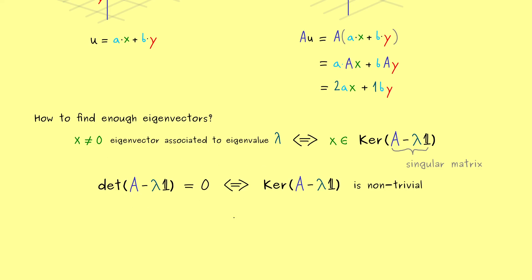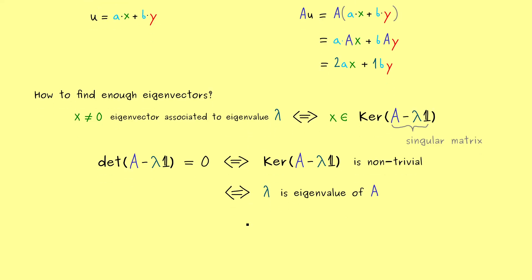More precisely, we have a singular matrix if and only if this determinant is equal to 0. Therefore, this equivalence now connects the determinant with the existence of eigenvalues — the determinant being 0 is equivalent to lambda being an eigenvalue, simply because if we know the kernel is non-trivial, we have an eigenvector, and for an eigenvector we always have a corresponding eigenvalue. In other words, in order to find enough eigenvectors, the first step is to find all possible eigenvalues, and we can do that simply by calculating a determinant.